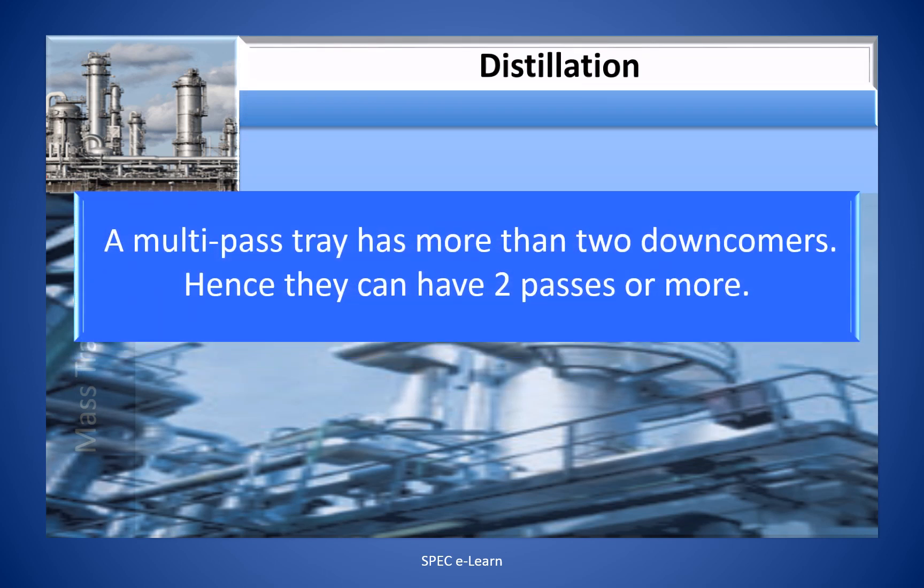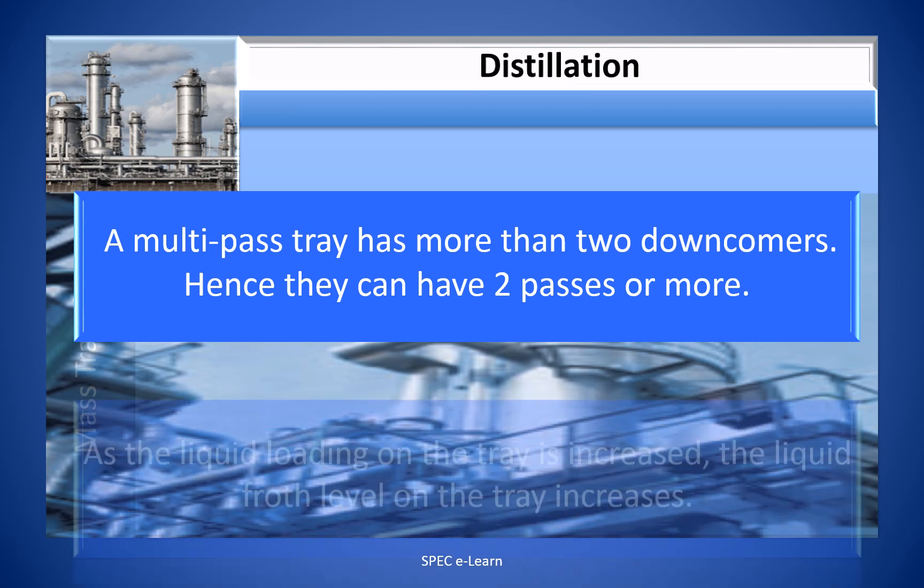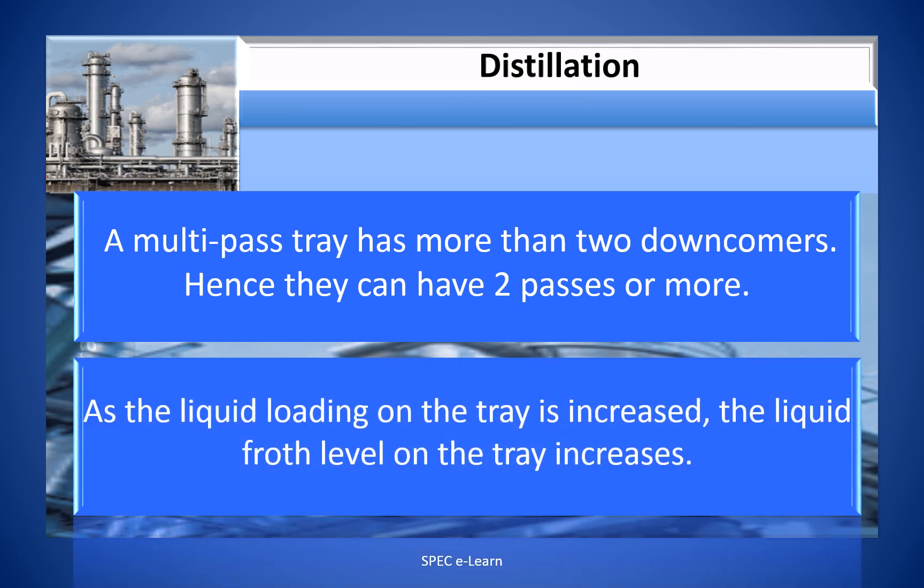A multi-pass tray has more than two downcomers. Hence, they have two passes or more for the liquid.